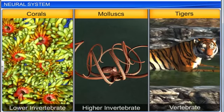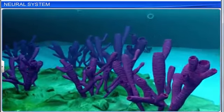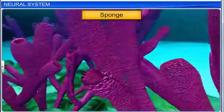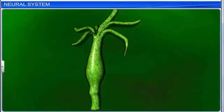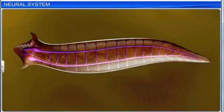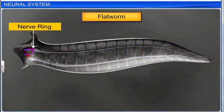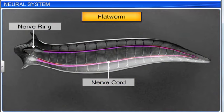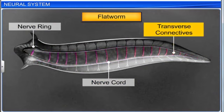Neural organization varies from lower invertebrates to vertebrates. For example, neurons are absent in sponges. The neural system of the hydra comprises a network of neurons. Flat worms have a ladder-type neural system, which is composed of nerve rings and nerve cords. They are interconnected by transverse connectives.